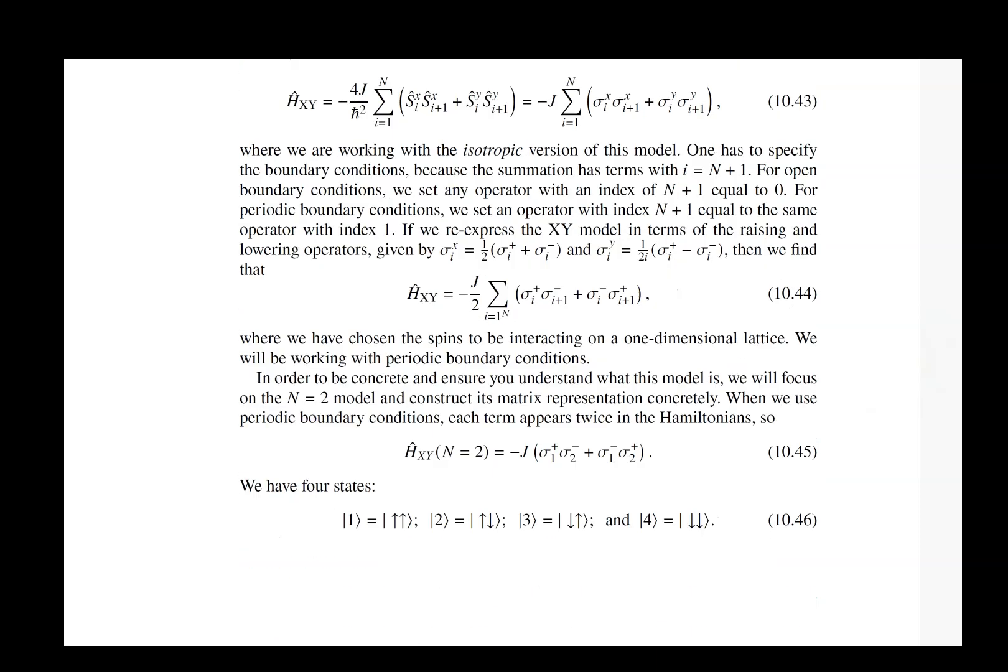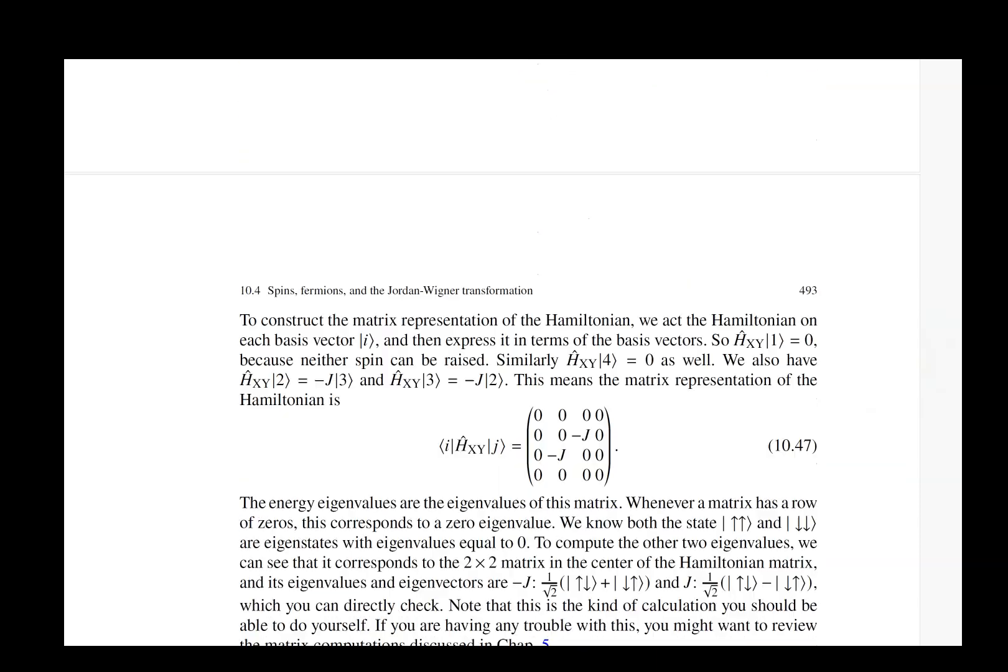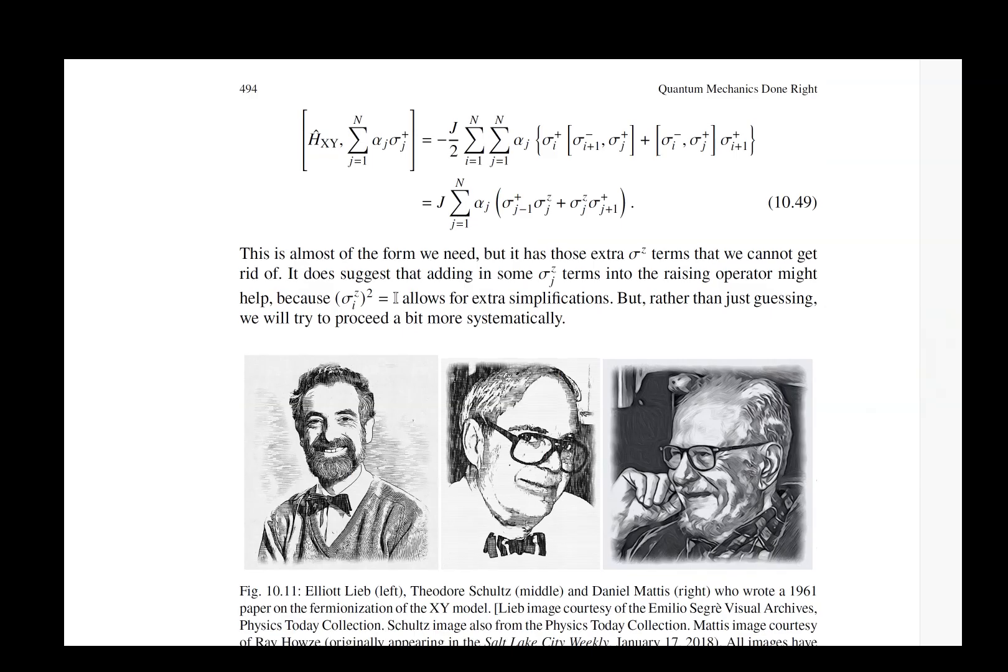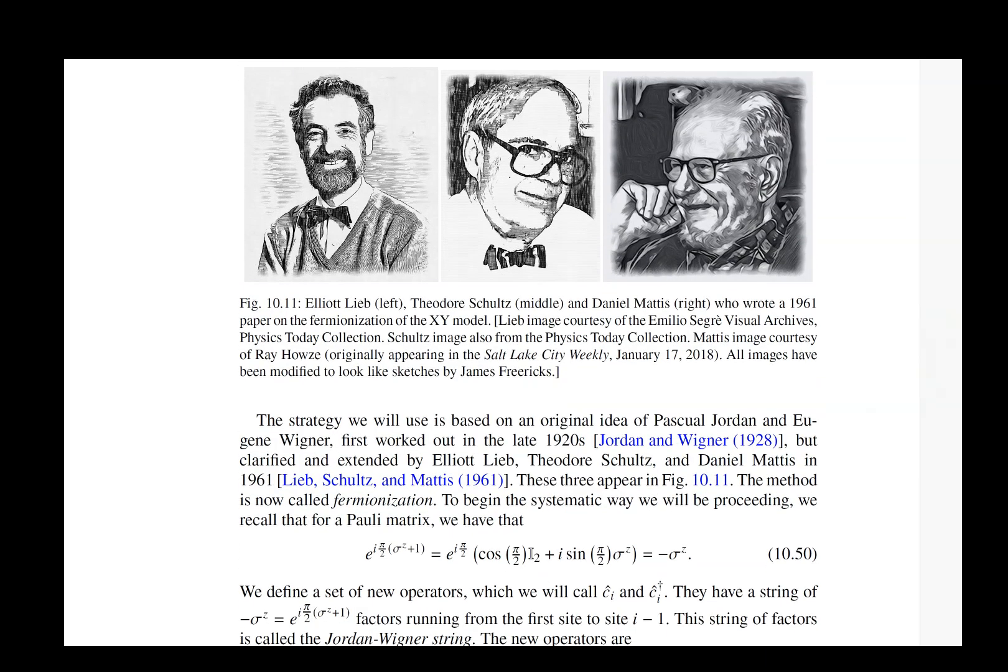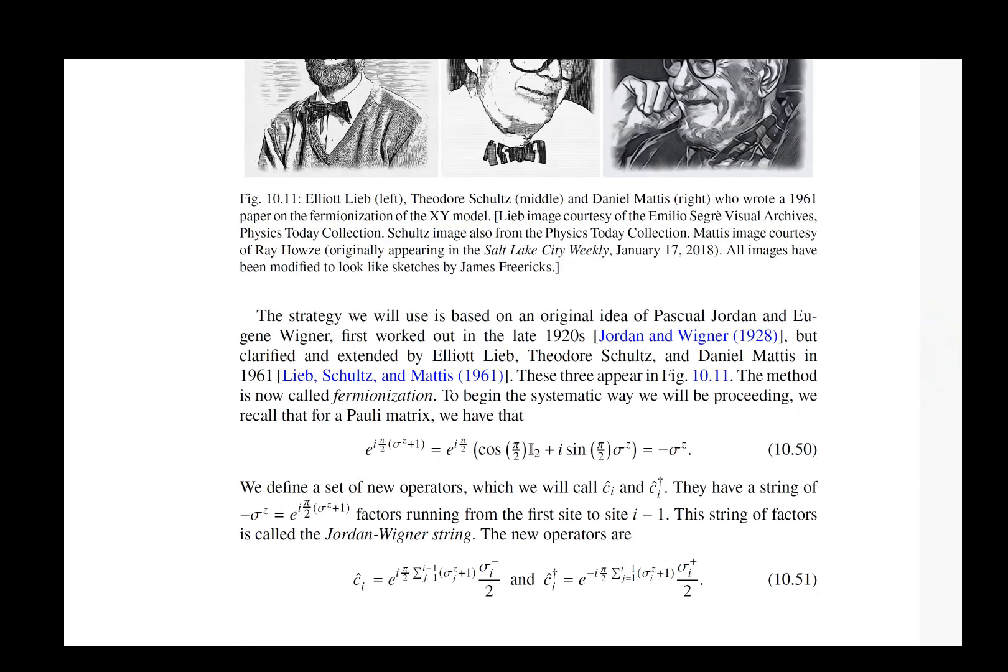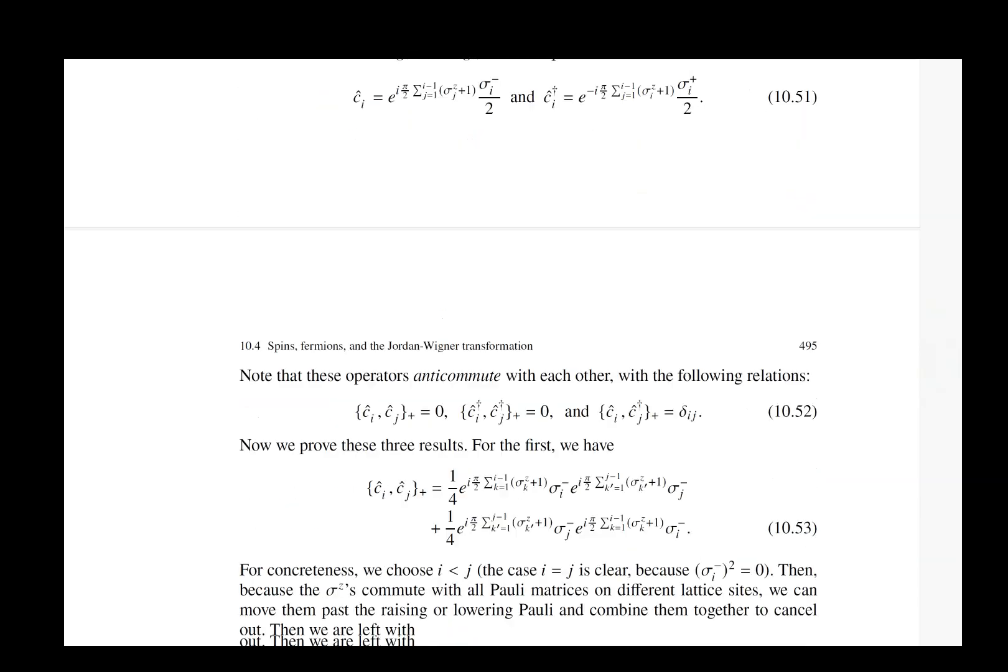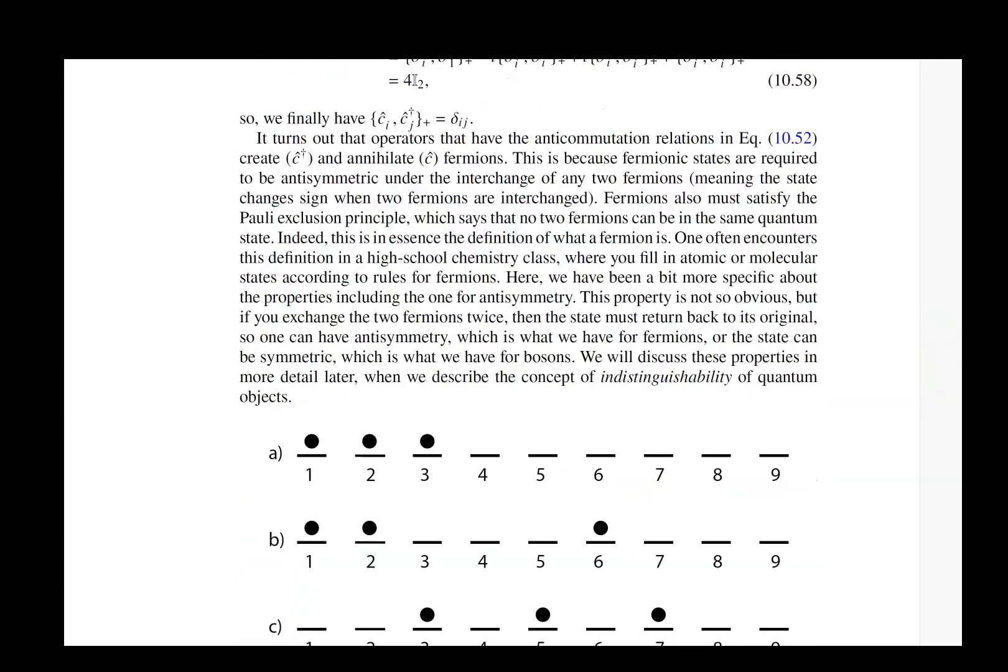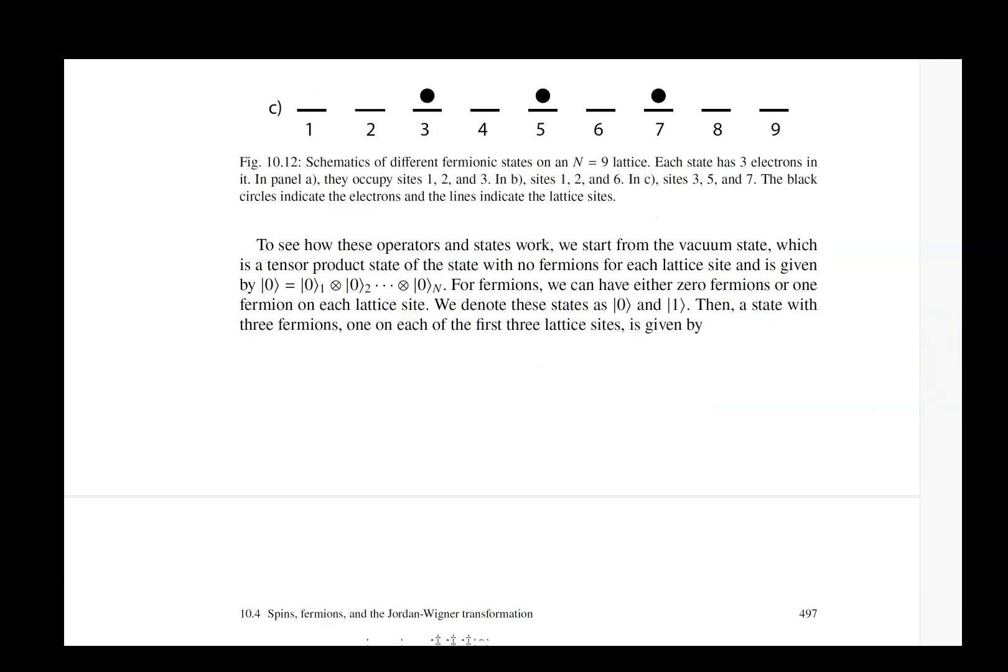And then we move into the Jordan-Wigner transformation and fermionization. It turns out this is what you need to solve the Ising model. We explain carefully how that works. This was worked out in detail in the early 1960s by Lieb, Schultz, and Mattis in an absolutely beautiful paper, which I highly recommend you read. The reference is, of course, available in the book. We cover just a small subset of what's in that article.